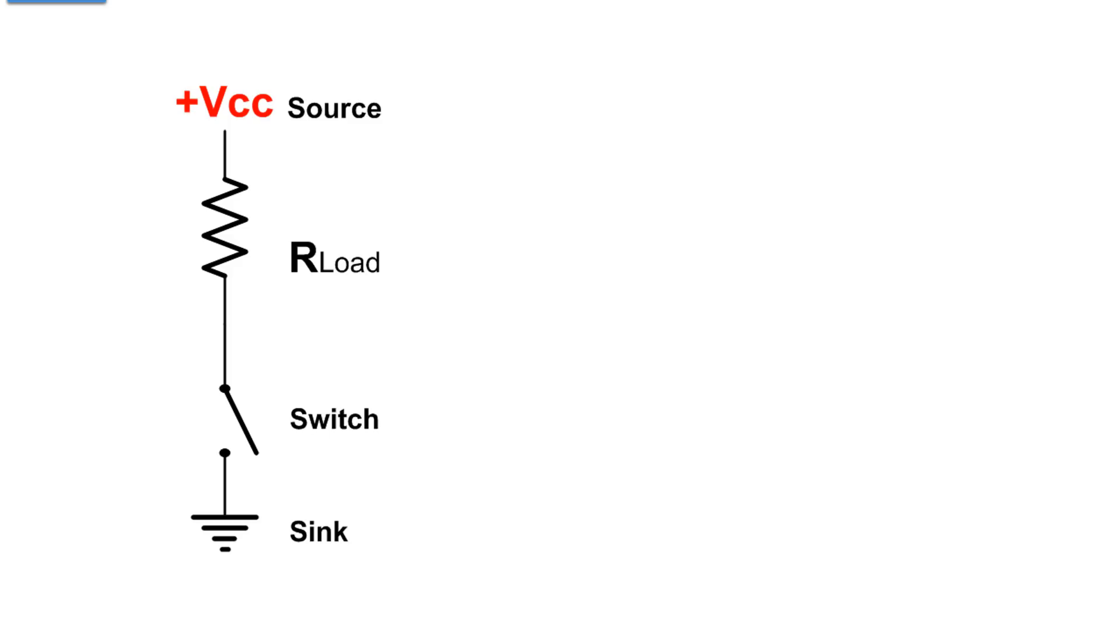Now we've assembled these four elements into a circuit. We have the high side of the supply or the positive side, we have a load, we have a switch to control, energize, de-energize of the load, and then we have the sink or low side of the power supply. Pure and simple.